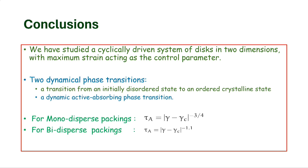We have two dynamical transitions in the system: one from a highly ordered state, and another from an absorbing-to-active transition. Whether these two transitions are coupled or connected to each other is unknown. It's possibly a coincidence that they happen at the same point, but our results stand there.